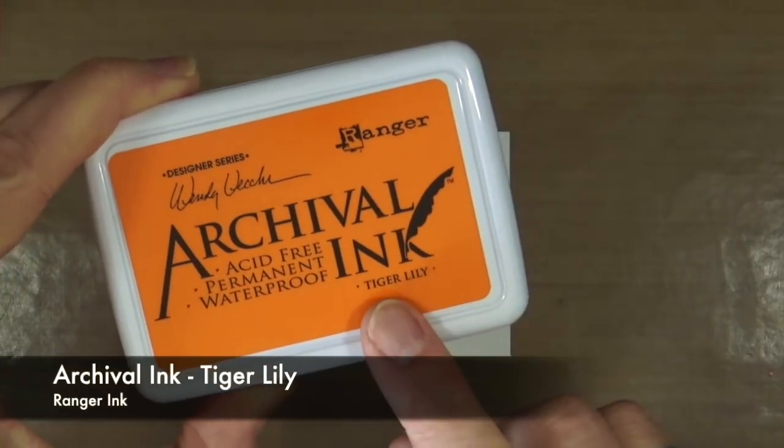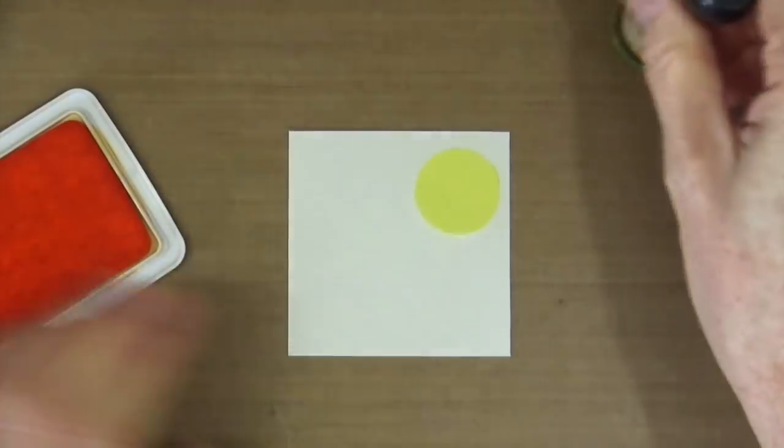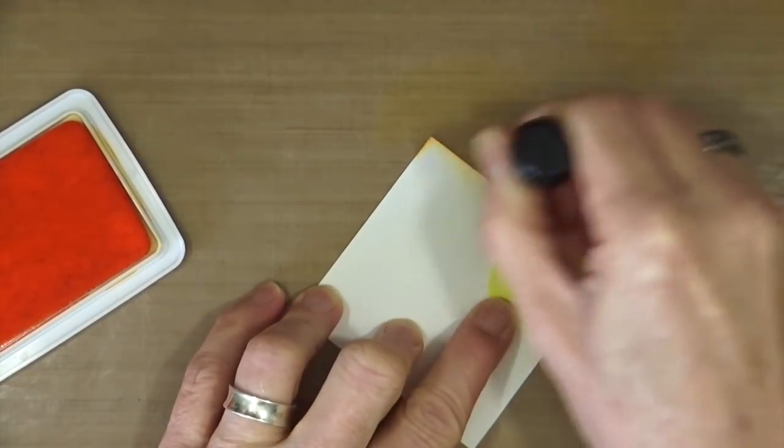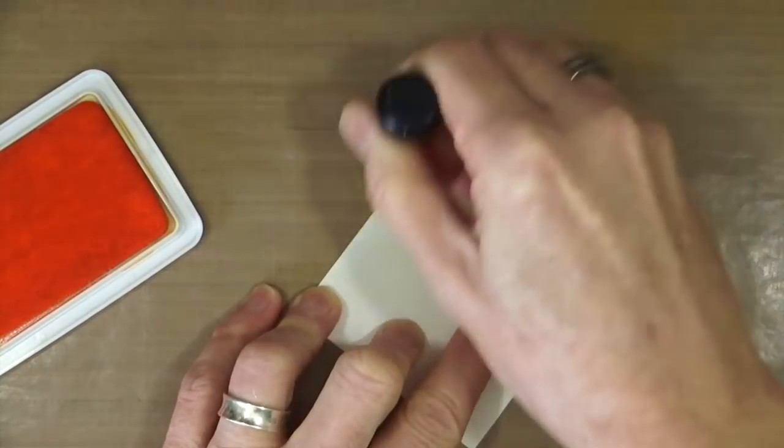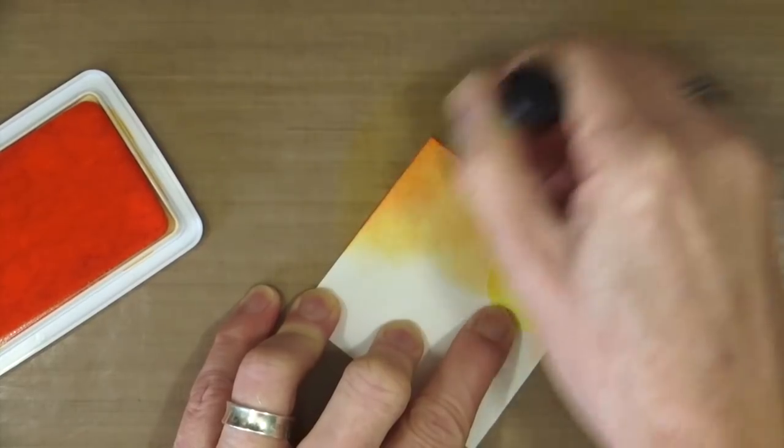With a blending tool and archival ink in Tiger Lily, which is a lovely orange color, I'm going to apply ink starting from the outside and working my way into the middle to get an even tone. I prefer to use archival ink rather than distress ink because it is permanent.